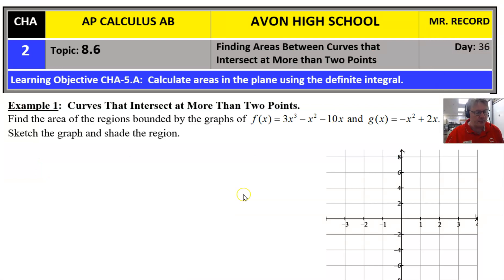We want to find the area of the regions, plural, bounded by the graphs of f(x) = 3x³ - x² - 10x and g(x) = -x² + 2x. Sketch and graph and shade the region, and that's there to help us figure out what regions we're finding the area of and perhaps to help us with our boundaries.